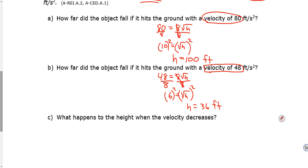What happens to the height when the velocity decreases? So if your velocity decreases, that means the height decreases. I'm going to actually write a complete sentence. The height will also decrease. So basically if it's hitting the ground with less force, that's because it was dropped from lower. So it's closer to the ground. So the height is actually going to decrease in that one.